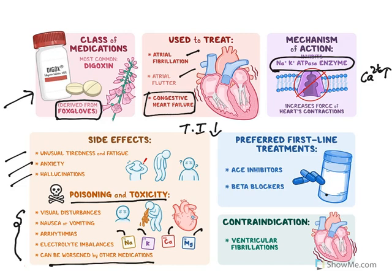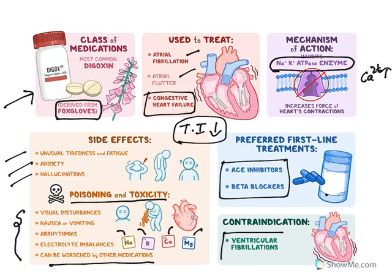Because of its low therapeutic index, the first-line drugs to treat congestive heart failure are ACE inhibitors and beta blockers. Regarding contraindications: in cases of ventricular fibrillation, digitalis glycoside should not be used. Understand this distinction — it can be used to treat atrial fibrillation and flutter, but if ventricular fibrillation is present, it should not be used.